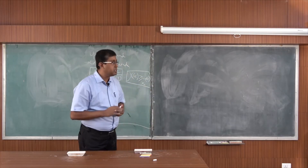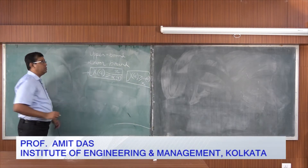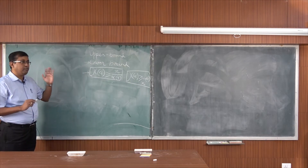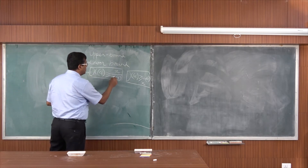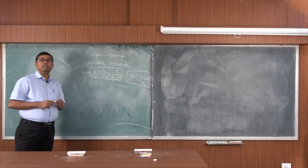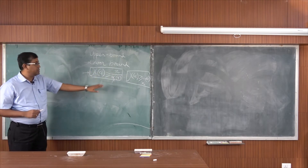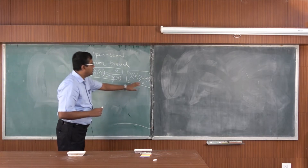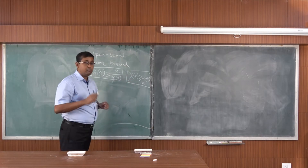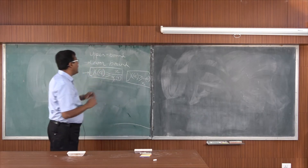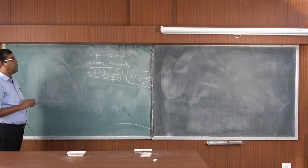Welcome students. In the previous lecture, we learnt about the lower bound of chromatic polynomials and introduced a new term: the independent number. The first theorem states that the chromatic number is greater than or equal to the number of vertices divided by the independent number. The second theorem states that χ(G) ≥ ω(G), where ω(G) is the clique number. These are the two theorems related to the lower bound.